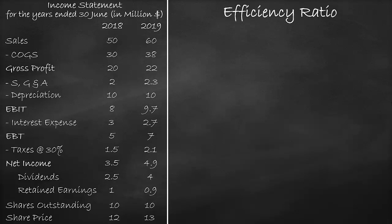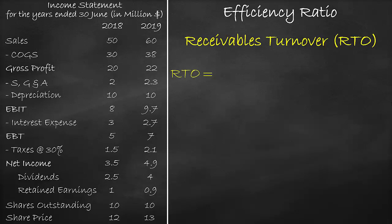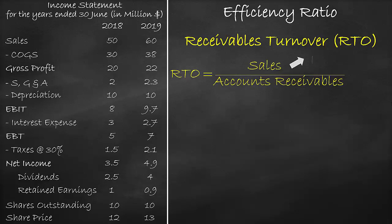An example of the efficiency ratio is the Receivables Turnover Ratio. The Receivables Turnover Ratio formula is Sales divided by Accounts Receivables. We use Sales with Accounts Receivables because both of them are revenues. We get the Sales from the Income Statement and we get the Accounts Receivables from the Balance Sheet.